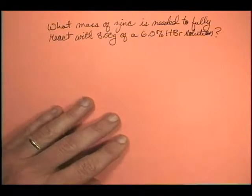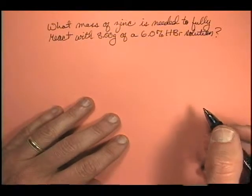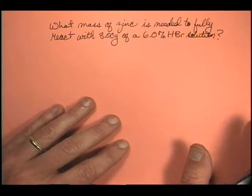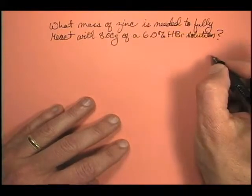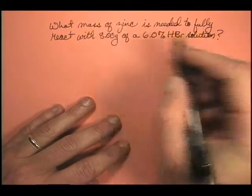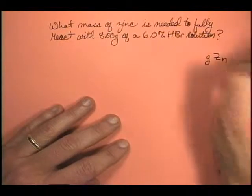First off, like all of these stoichiometry problems, what are the units of our answer? Well, it says what mass, and I said we're going to do it in grams. So we're going to say, okay, it's grams of what? Zinc. That's what we're shooting for.